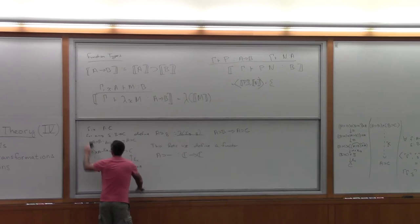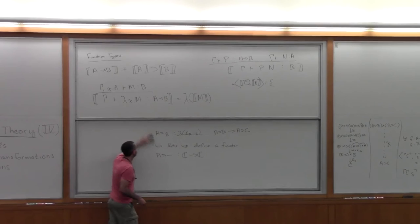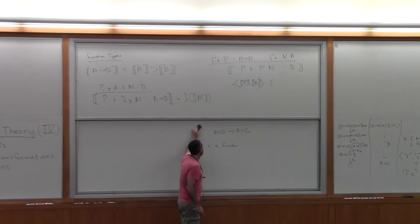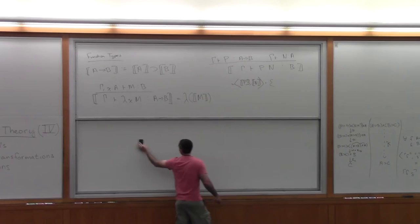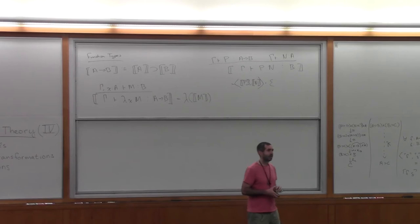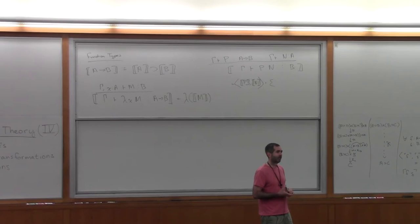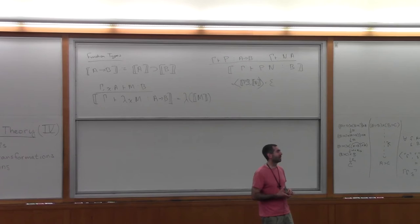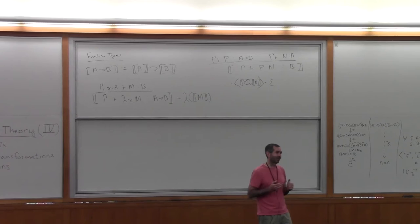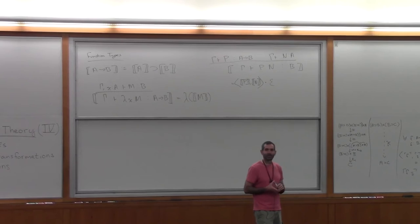A question from the audience: as we introduced global elements and generalized elements, it seems like set-theoretic thinking keeps coming back. Can you give an example of how set-theoretic thinking fails in a Cartesian closed category? The answer involves whether the category is well-pointed — not every CCC is. Let me take that question during the break, since there's some cool stuff I want to cover next.